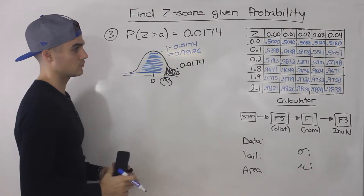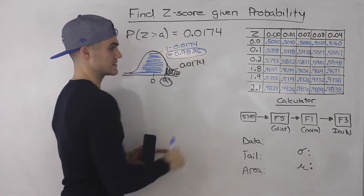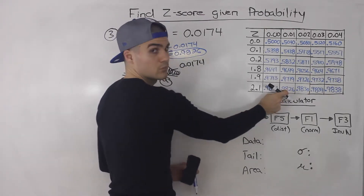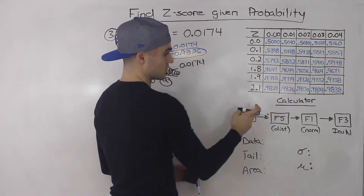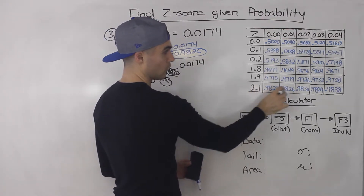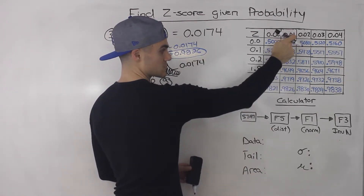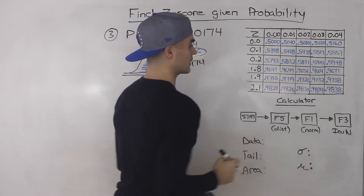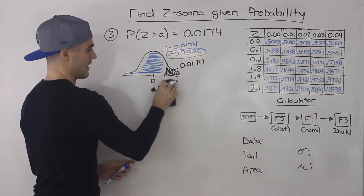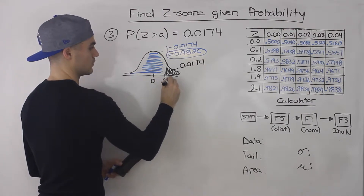So 0.9826 is the corresponding left-tail probability, and now we can use the table. We just look up 0.9826 — where is that in the table? If we look it up, it's right there: 0.9826. So the corresponding z-score is 2.11. This is 2.1 on the row and then the second decimal place is 1 as well. That's where they meet at 0.9826. So we know that this z-score is 2.11.